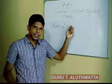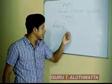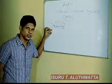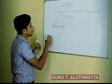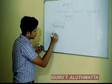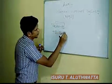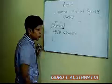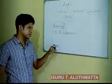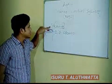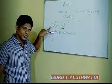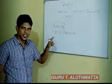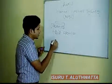When management is designing the internal control system, they are going to achieve these objectives. Number one is effectiveness and efficiency of operations. Organizations do have their operations, and when designing the internal control system, it should achieve effectiveness and efficiency of those operations.